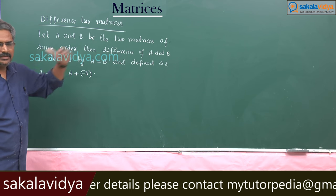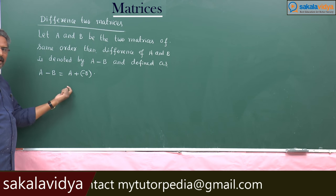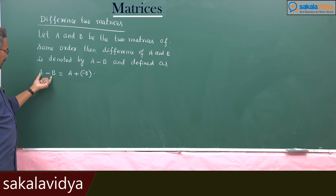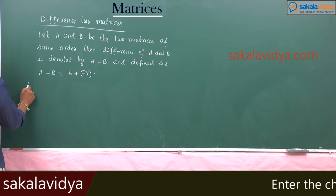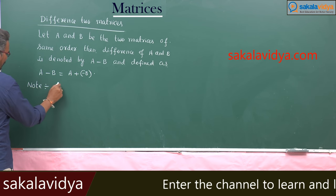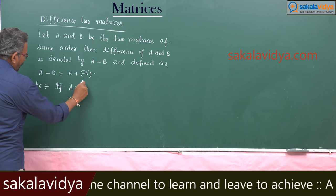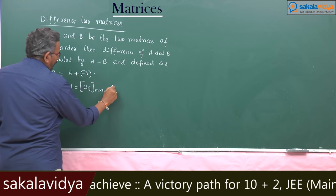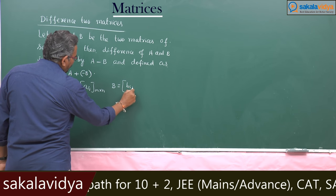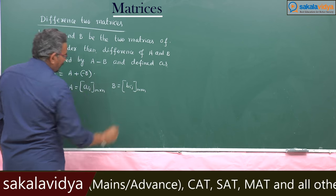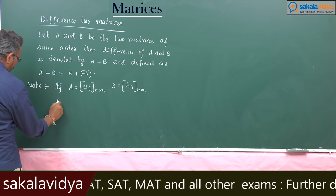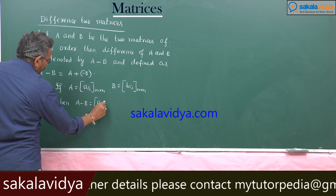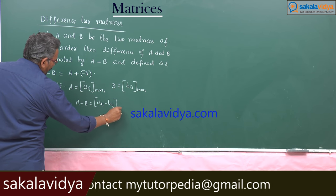Already we have discussed in the previous case: if you add the additive inverse of B to A, that is called the difference of A and B. So A minus B is equal to A plus of minus B. Furthermore, if A is equal to a_ij m by n and B is equal to b_ij m by n, they are of same order, then A minus B is defined as (a_ij minus b_ij), m by n only.